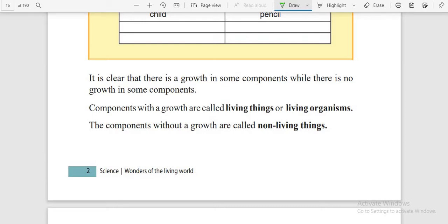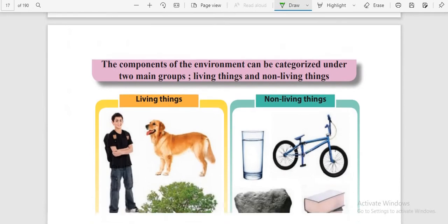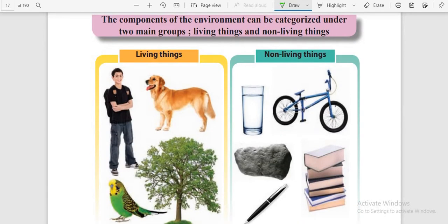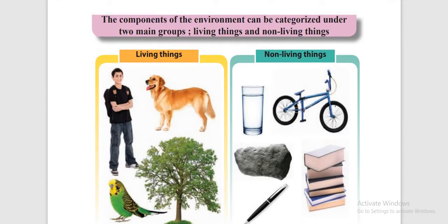Now let's see some living things and non-living things. In the first chart you can see: a boy, dog, tree and bird. The boy, dog, tree and bird can grow, move, eat and respirate.